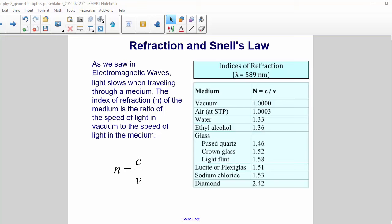n equals c over v, where n is the index of refraction, c is the speed of light in the vacuum, 3 times 10 to the 8th meters per second, and v is the speed of light in the material.